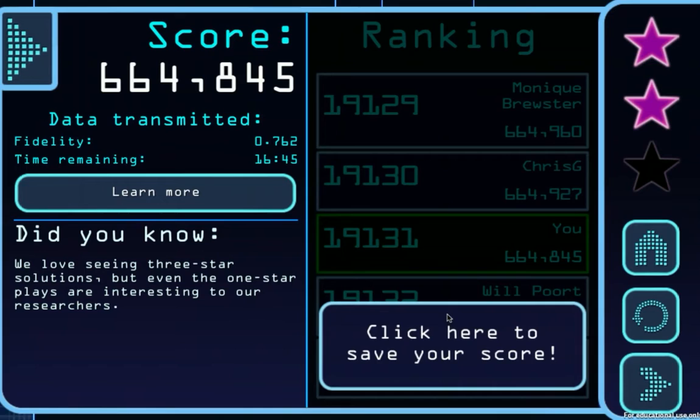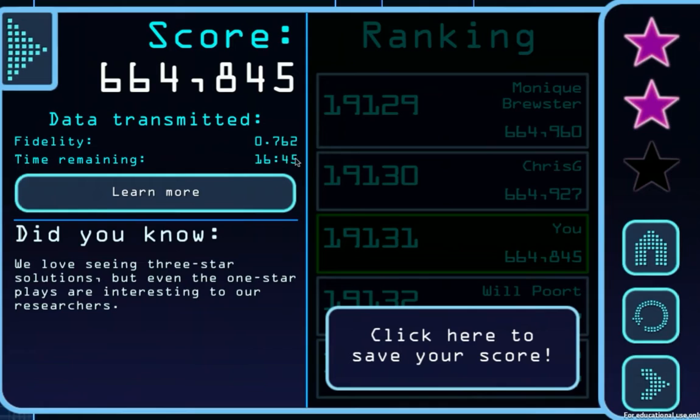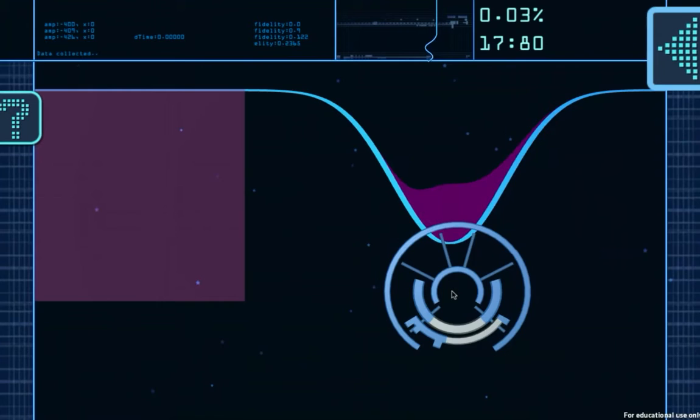And we need to get into this target region with as high a probability as possible and also as high a probability that it's in the right state as possible. The probability that we had was 76.2% which is not too bad and we did that in a time which also wasn't too bad. We got two stars. If we got three stars then obviously it would be even better.